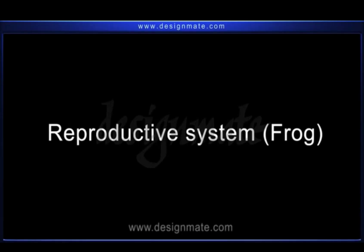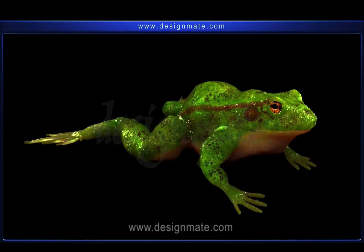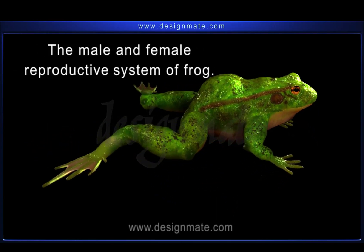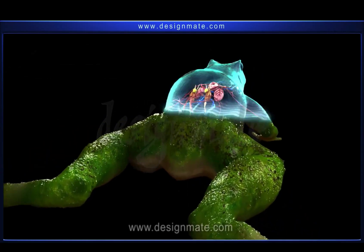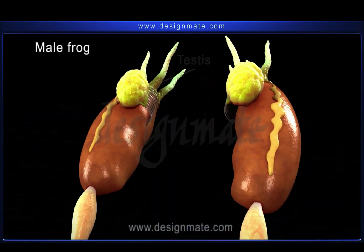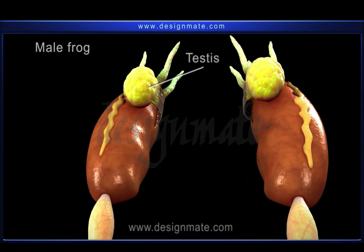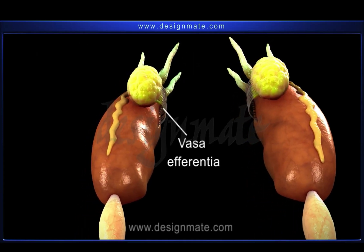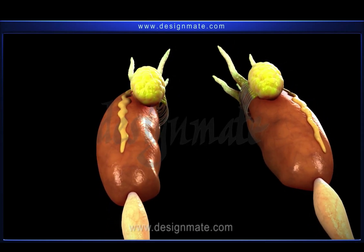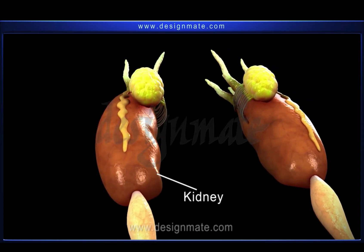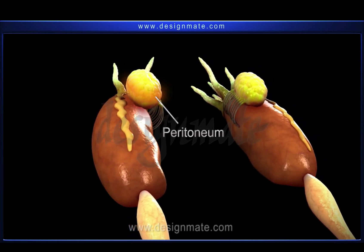In this topic we will learn about the male and female reproductive system of the frog. The male frog possesses a pair of testes as the principal reproductive organs and 10 to 12 vasa efferentia. Each testis is located anteriorly towards the inner margin of the kidney, enveloped by a layer of peritoneum.